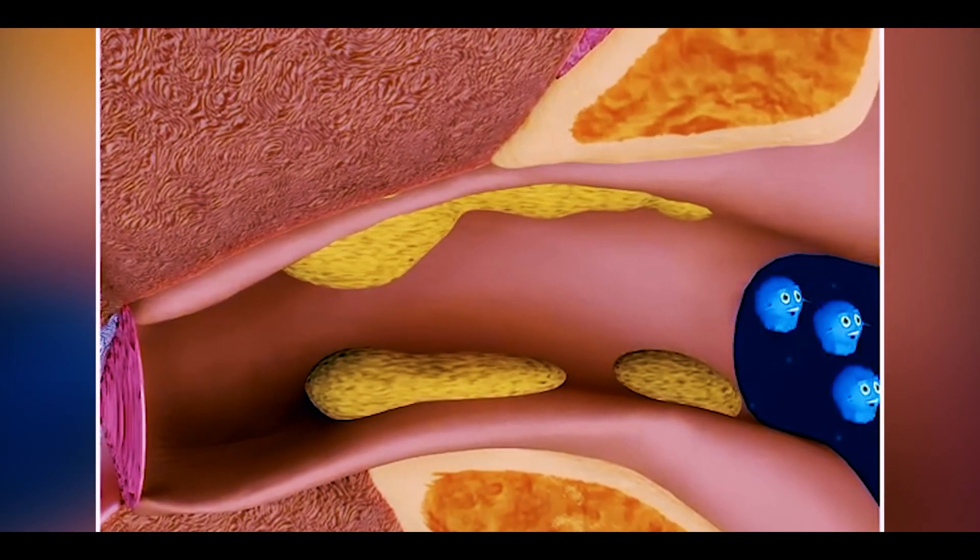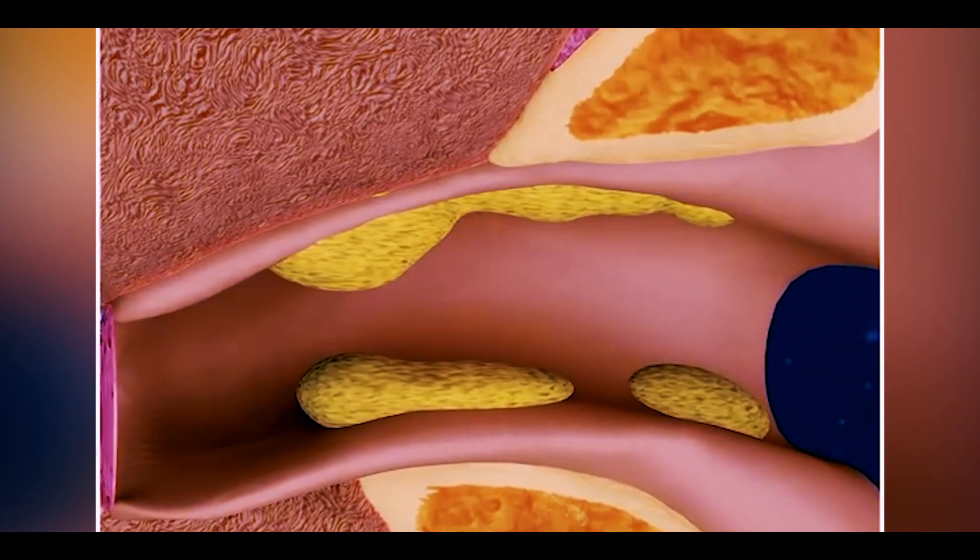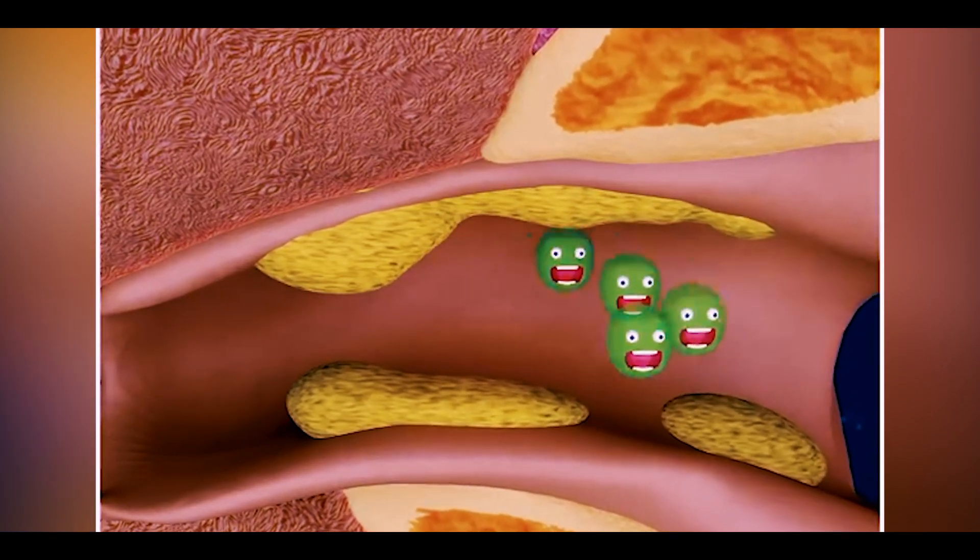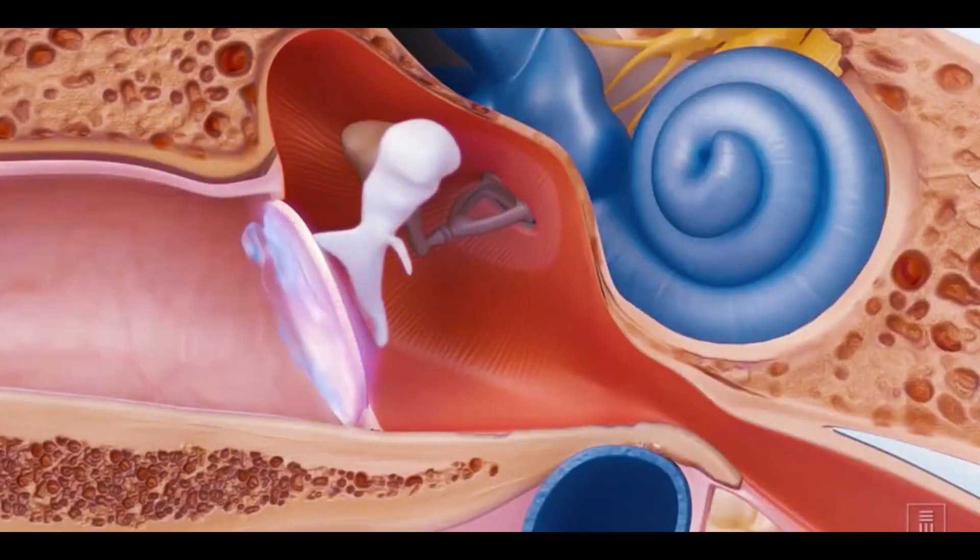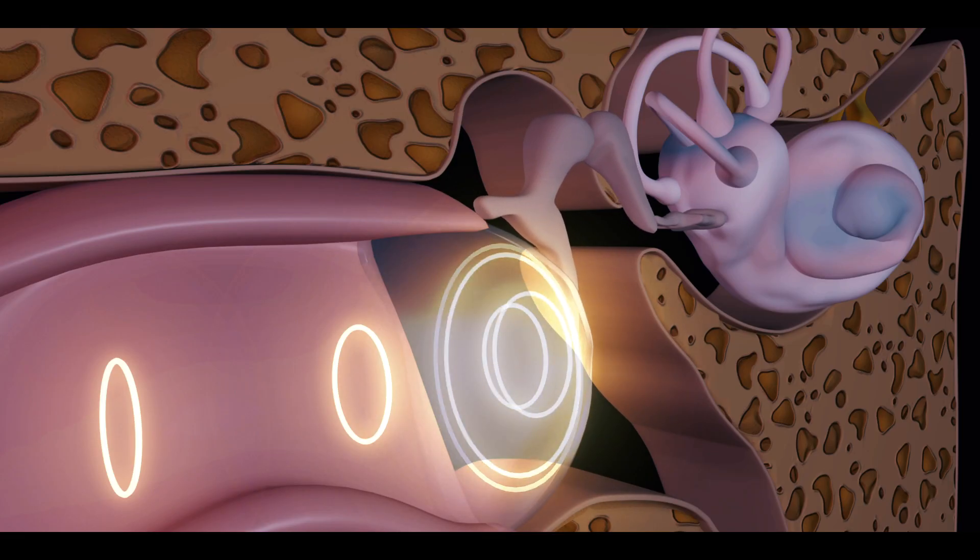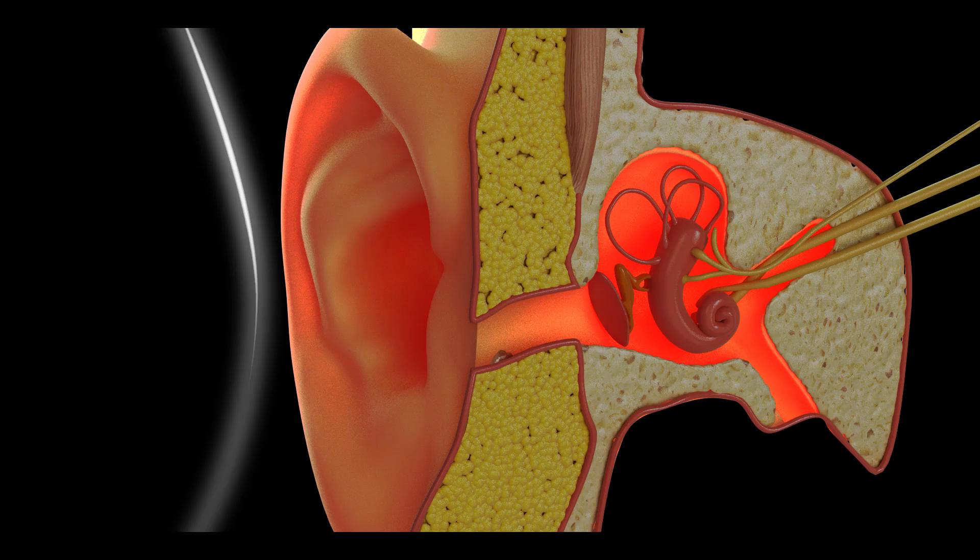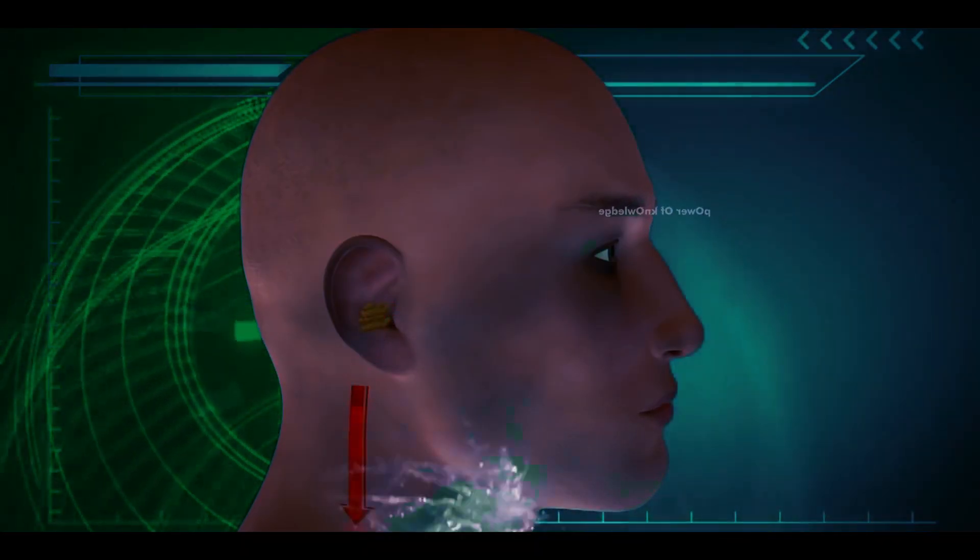Cerumen forms a thick protective layer in front of eardrums for entrapment of dirt and bacteria entering our ears to avoid them reaching the eardrums. In this way, eardrums are protected naturally, and hearing function is performed properly, while cerumen is replaced with new cerumen through the self-cleansing mechanism of our ears.